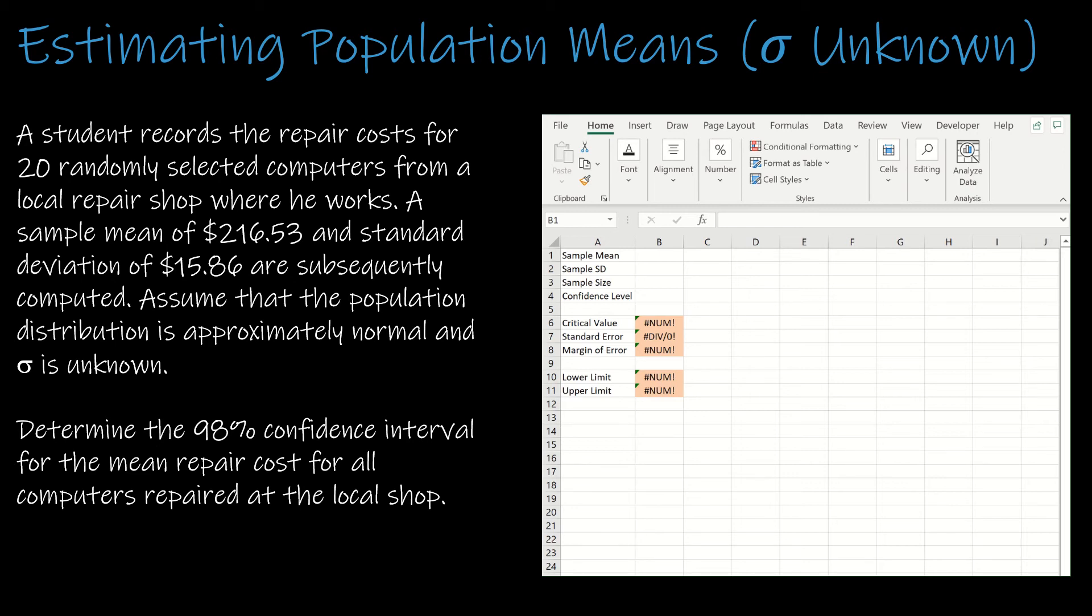Now I can start doing the calculations. I'm going to plug in the information given in the question: a sample mean of $216.53, the sample standard deviation of $15.86, a sample size of 20 computers, and we are finding a 98% confidence interval, 0.98. This is going to do all of the work for me. So this is the critical value, this is the margin of error. My lower limit $207.524 and upper limit $225.536. Remember what we're looking at here is the mean repair cost for all computers repaired. So we can say that I'm 98% confident that the true mean repair cost for all computers repaired at the local shop is between $207.52 and $225.54.